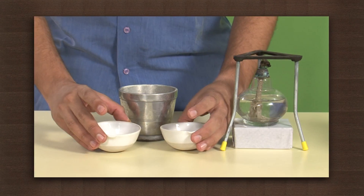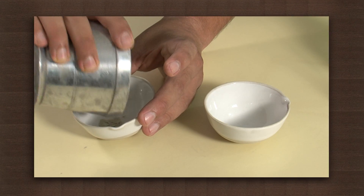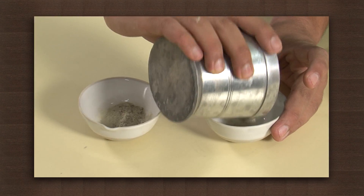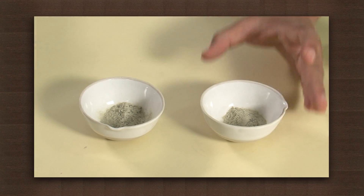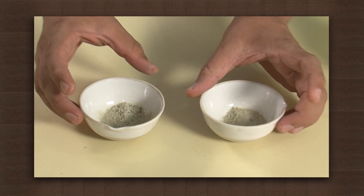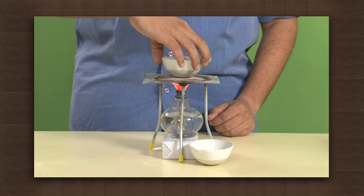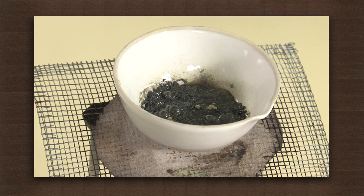Now take equal amounts of this mixture in two crucibles. Keep one aside while heating the other. Heat the mixture strongly. After some time you will notice that a compound is formed that is black in colour.